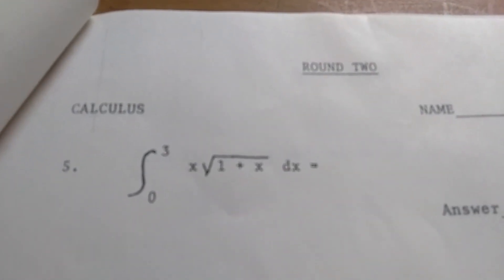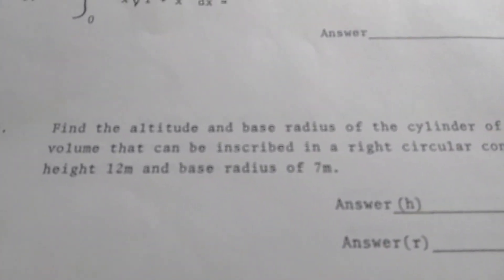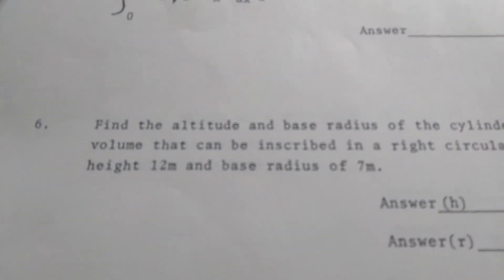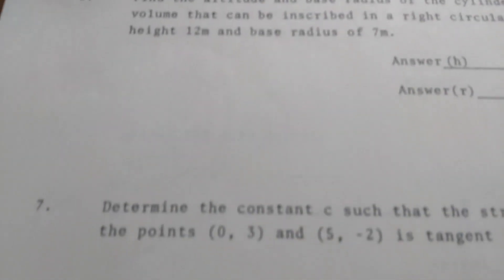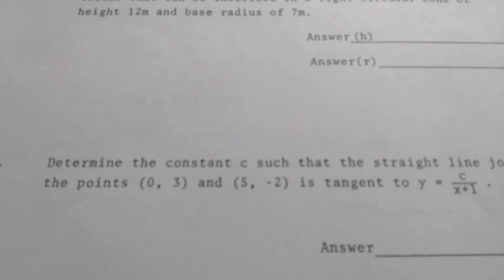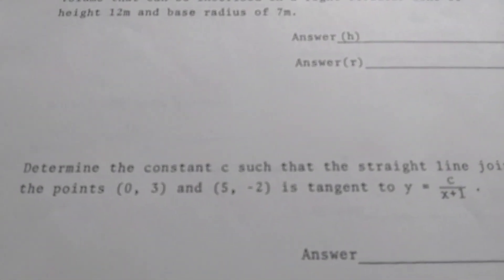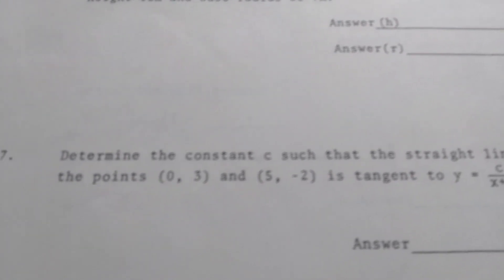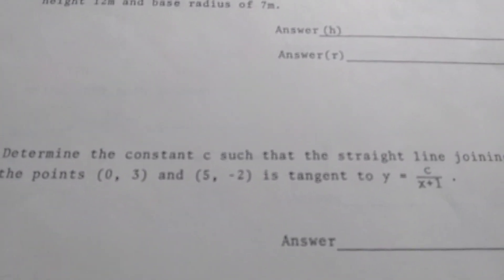Here we have another integral. So nothing really special. Then we have some problem regarding a cylinder. So again not too bad. And then here we have some other problems. Determine the constant c such that the straight line joining the points is tangent to... That's kind of a novel question. It's kind of different. A little bit different than what we normally see.